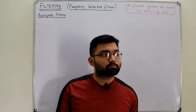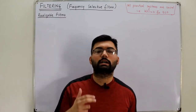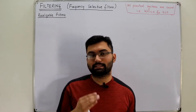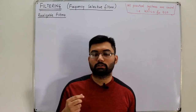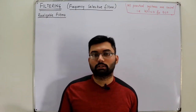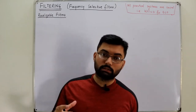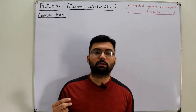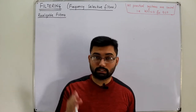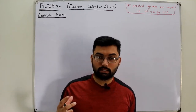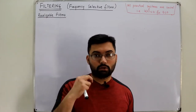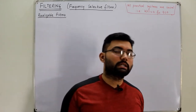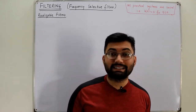We concluded the previous video with a question. We saw that the impulse response was not equal to zero for negative values of time. So the ideal filters — the best filters — were not practically realizable because they represented a non-causal system. All practical systems are causal systems, which means the impulse response H(t) should be zero for negative values of time.